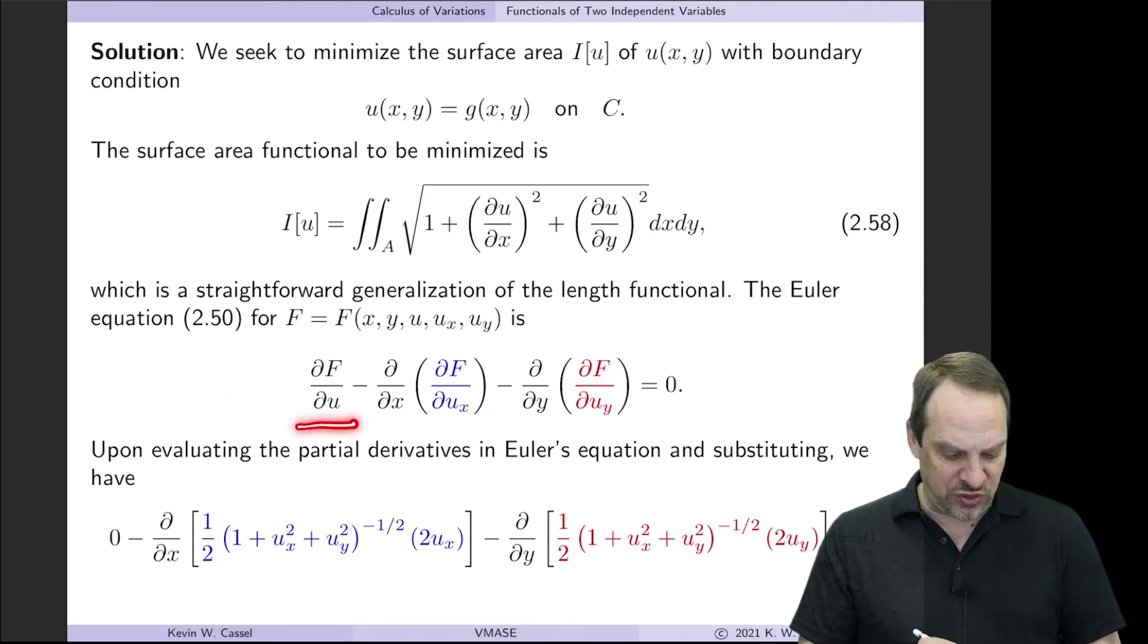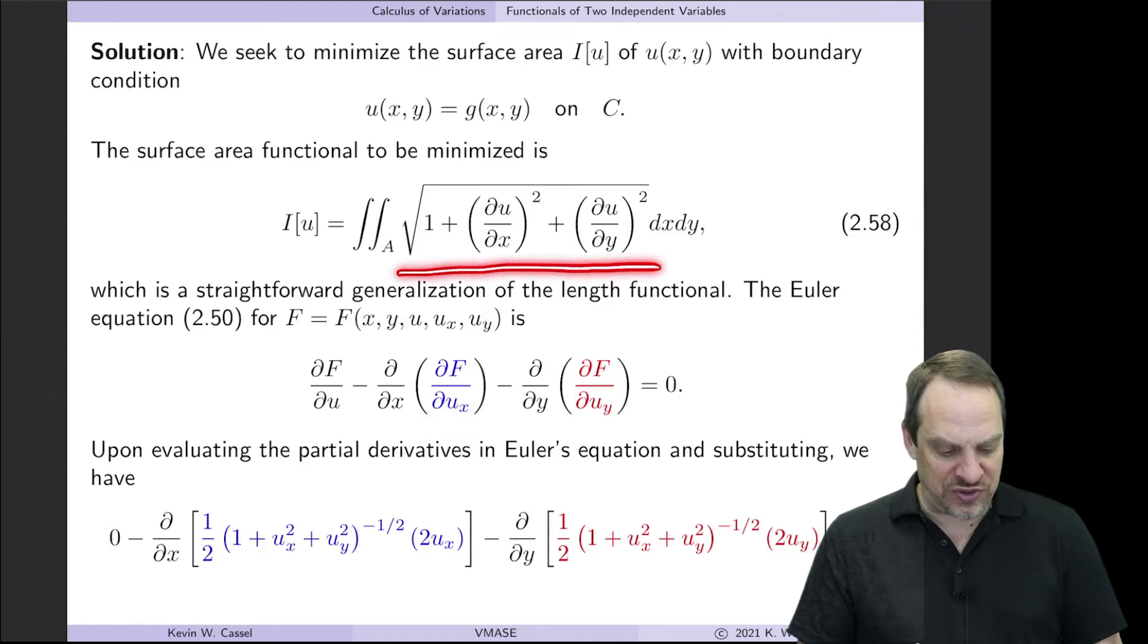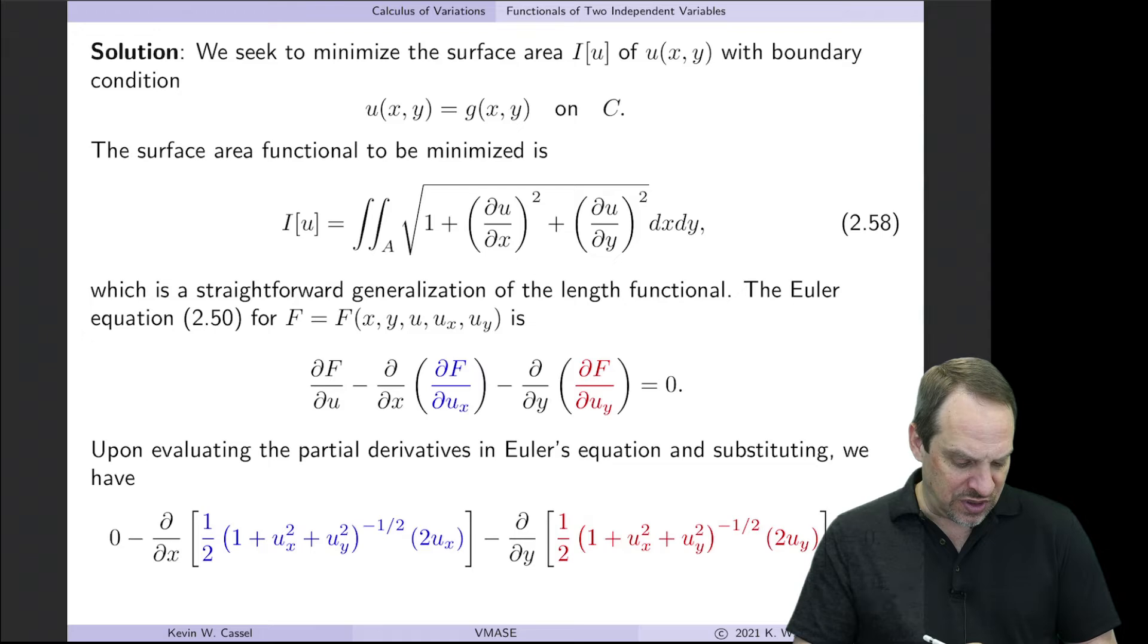It's partial f partial u. You'll notice there actually are no u's here, so that term is going to vanish. Minus partial partial x of partial f partial u sub x, minus partial partial y of partial f partial u sub y is equal to zero. So if we evaluate these two, you'll notice I've color coded these. So the partial derivative f with respect to u sub x, it's a bit messy because we have the square root of the sum of the squares. But this is what you get. Here it is in blue.